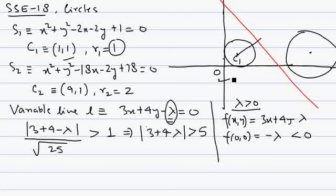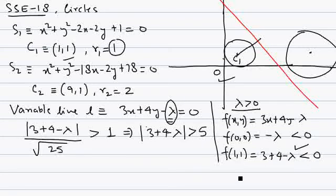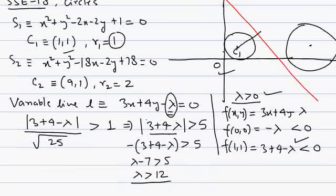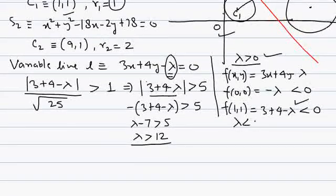The sign of origin with respect to this line is negative, so the sign of (1,1) should also be negative: 3 + 4 − lambda should be negative. We put a minus sign outside, so lambda − 7 greater than 5, giving lambda greater than 12. This satisfies lambda greater than 0. So for lambda greater than 12, this line will be above the circle without intersecting it.